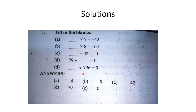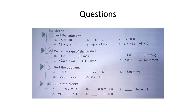D part: 79 pehle se diya hua hai aur answer 1 chahiye. Same number par divide karein to answer 1 aata hai. To yahan aapne 79 likhna hai: 79 divided by 79 = 1.